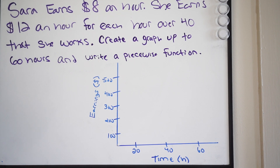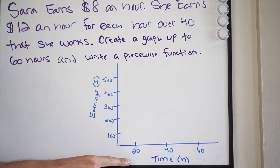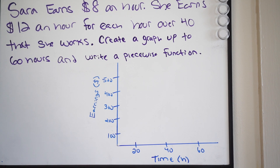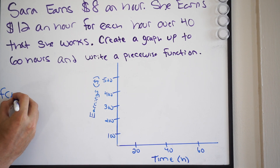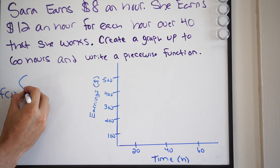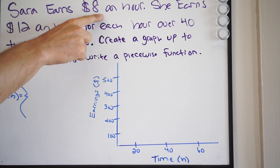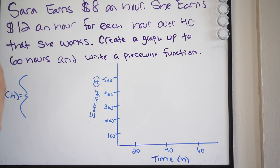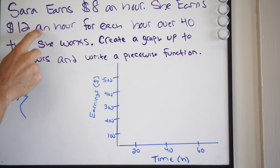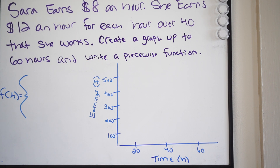So I'm going to set up our piecewise function. On the X we have time, represented by H, and we have the earnings on the Y, so I'll write F of H. Now, Sarah earns $8 an hour — that's one function. She earns $12 an hour for each hour over 40 — that's a second function. So we're going to have two total functions.